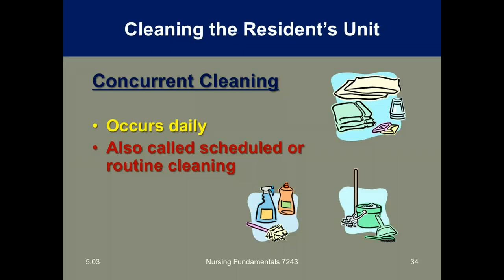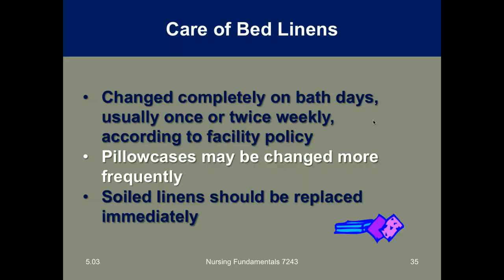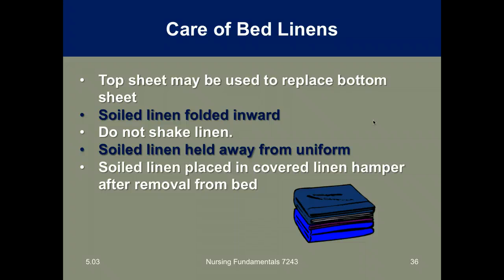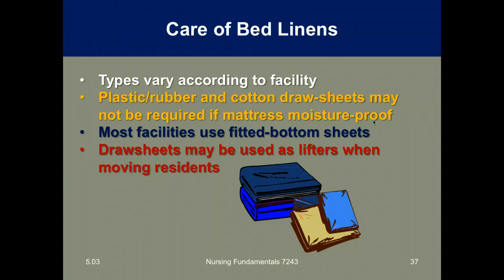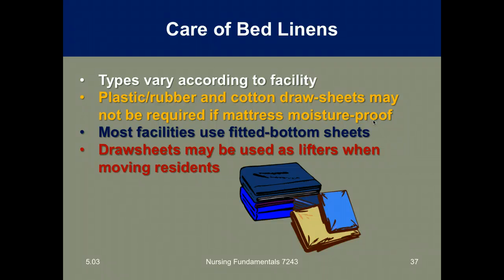Concurrent cleaning happens every day and is also called scheduled or routine cleaning. Bed linens are changed completely on bath days — usually once or twice weekly or per facility policy — and pillowcases may be changed more frequently. Soiled linens should be replaced immediately; the top sheet can be used to replace the bottom sheet. Soiled linen is folded inward — do not shake linen — and held away from the caregiver's clothing. Soiled linen is placed in a covered linen hamper and removed after it's taken from the bed. Types of linen vary by facility; plastic, rubber, and cotton draw sheets may be required. Most facilities use fitted bottom sheets, and draw sheets are used as lifters when moving the resident.